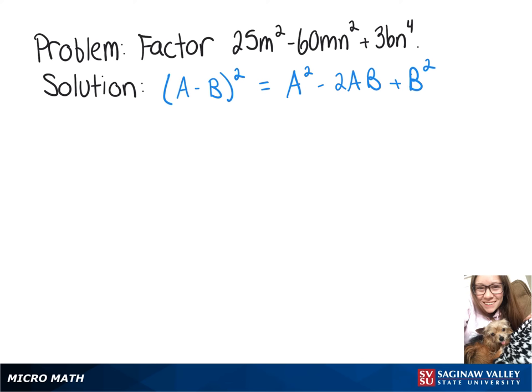We're going to factor 25m squared minus 60mn squared plus 36n to the fourth. To do that, we're going to keep this formula in mind.